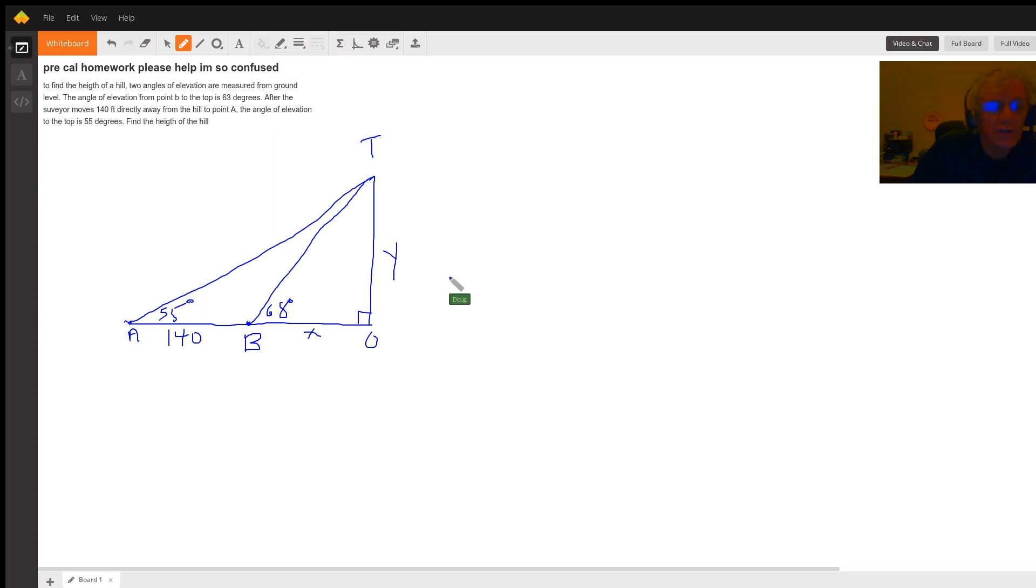Usually when you have two unknowns, you need two equations involving x and y. One of them deals with this triangle right here, triangle BOT—that's a right triangle. And in that right triangle, the tangent of 68... whoops, it's 63, I just see that right now. The tangent of 63 is equal to opposite over adjacent, y over x.